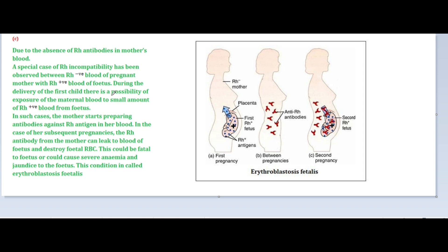During the delivery of the first child, there is a possibility of exposure of the maternal blood to a small amount of Rh-positive blood from the fetus. In such a case, the mother starts preparing antibodies against the Rh antigen in her blood. In the case of subsequent pregnancies, the Rh antibodies from the mother can leak into the blood of the fetus and destroy fetal RBCs, which could be fatal to the fetus.